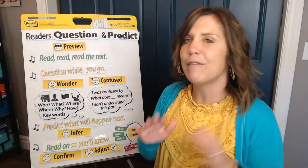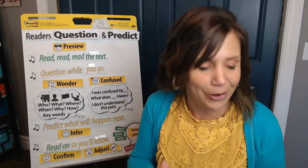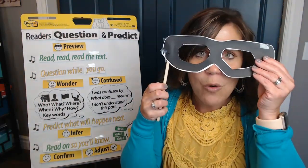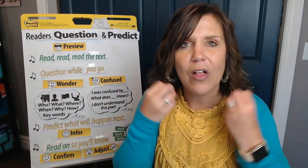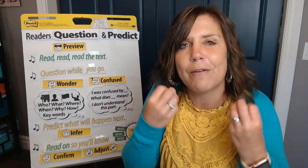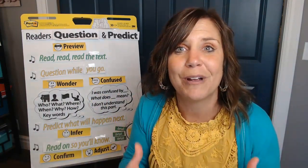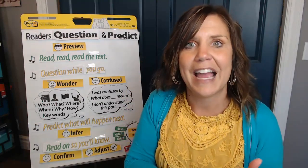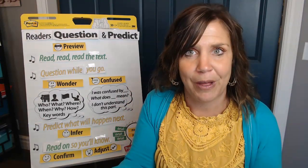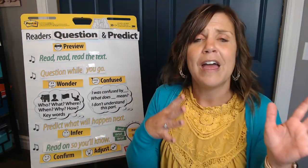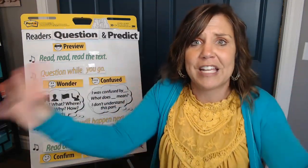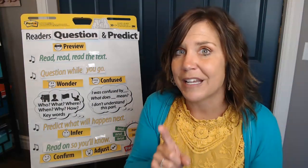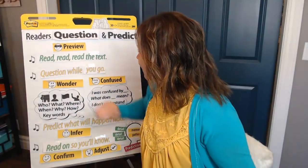Then we talked about how readers preview the text before you even read a single word. We're like information thieves where we try to gather all the details and information we can before reading. We gather information from the title, from the cover of the book. We flip through the pictures and look at charts and graphs and gather all that information before we even read a single word. That's called previewing.